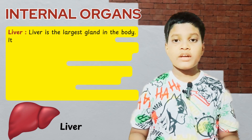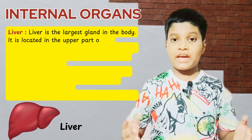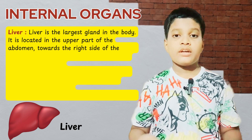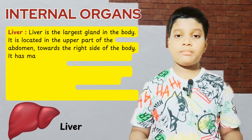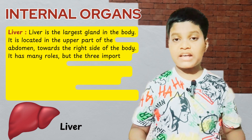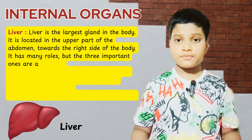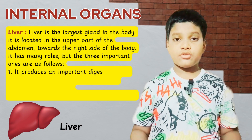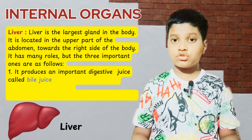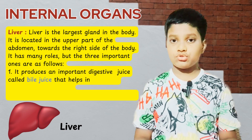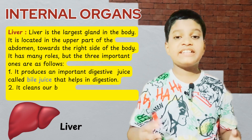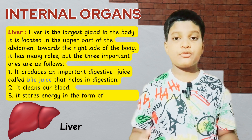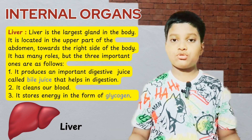Liver: the liver is the largest gland in the body. It is located in the upper part of the abdomen, towards the right side of the body. It has many roles but the three important ones are: first, it produces an important digestive juice called bile juice; second, it cleans the blood; third, it stores energy in the form of glycogen.